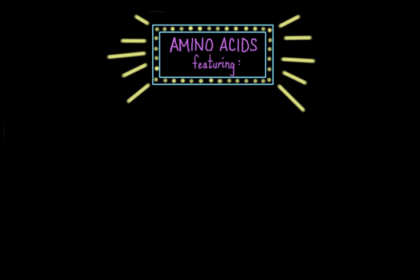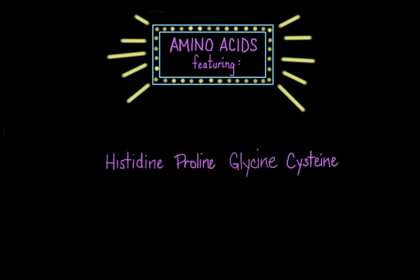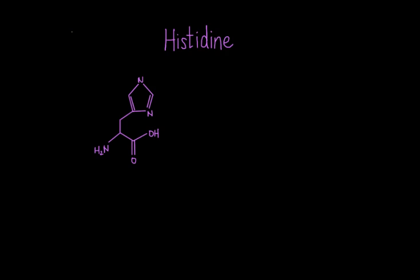Welcome to the amino acid show. This show is going to feature just four of the 20 amino acids: histidine, proline, glycine, and cysteine. These four amino acids deserve extra time in the spotlight because they each have a side chain that sets them apart from the rest. Let's go through them one by one and see what these side chains are all about.